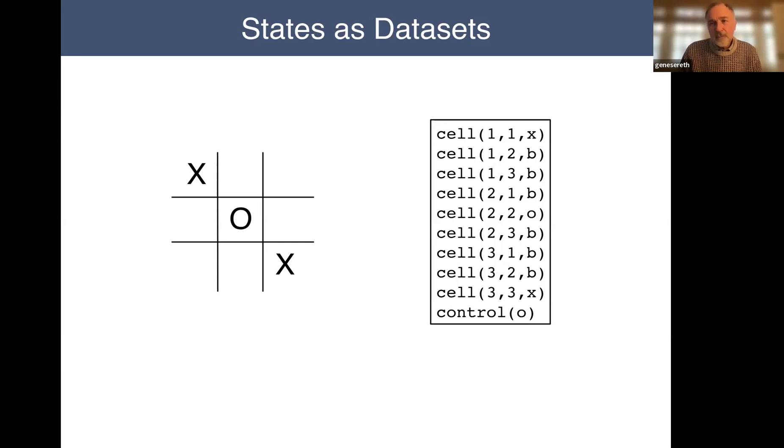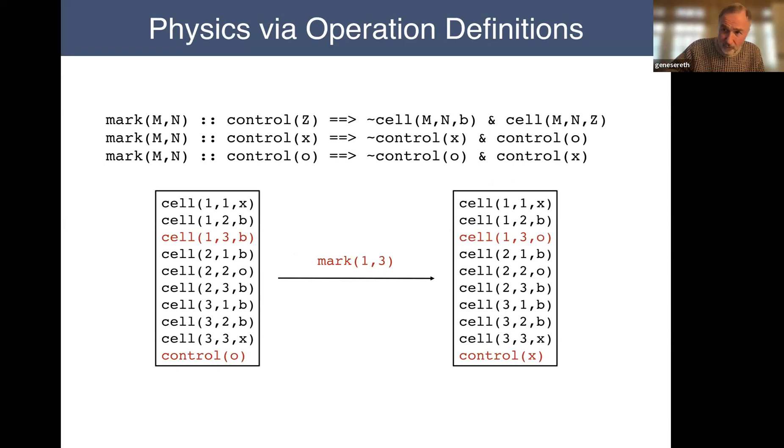So an example of this would be a very simple example is tic-tac-toe where you take a state of the game is captured as a dataset here, a ternary relation saying which marks are in which cells, x, y coordinates and which player is this thing at the bottom, control, which player's turn, which player is supposed to play at this point. And so once you've got that, we can also talk about how the game changes as players move in these states. For example, if the player marks cell MN, if Z is the player, then afterward that cell no longer contains a blank B and now contains the player's mark. So here I think we've got the O player has marked cell one three. So cell one three is no longer blank is now an O and O no longer gets to play. It's now X has turn to play and so forth. So we see the effects on the dataset by using the operation definitions.